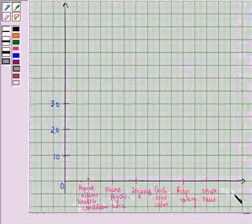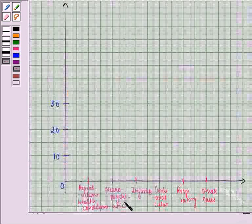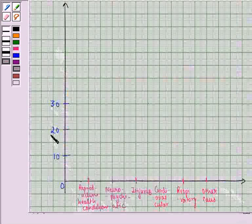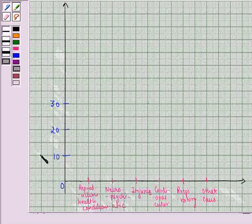Suppose this is the graph that we have. On the x-axis we have the causes and on the y-axis we have the female fertility rate.